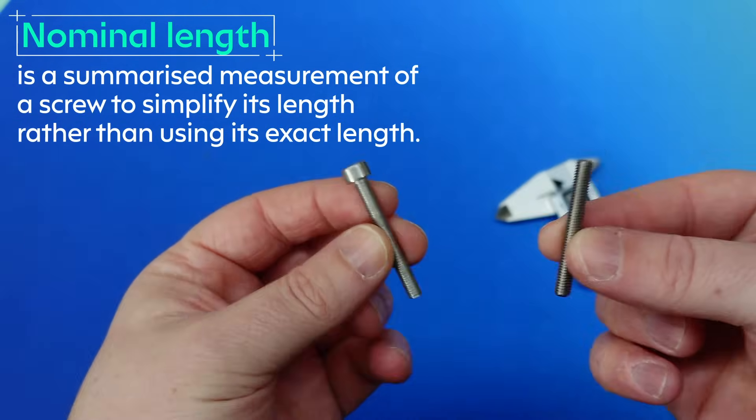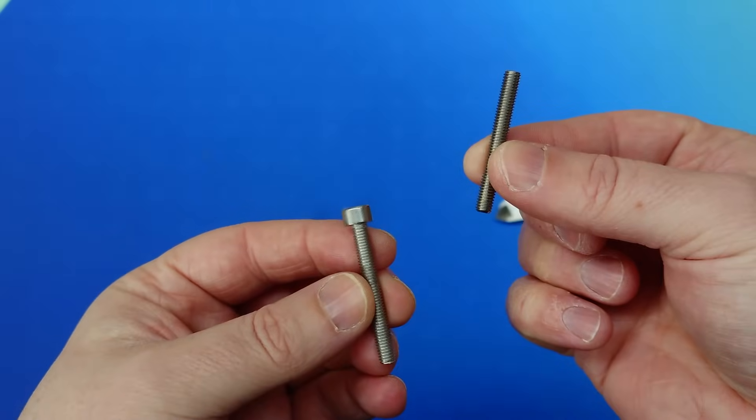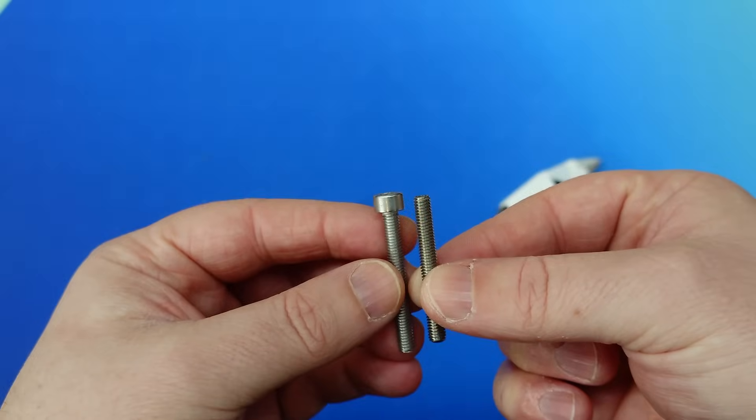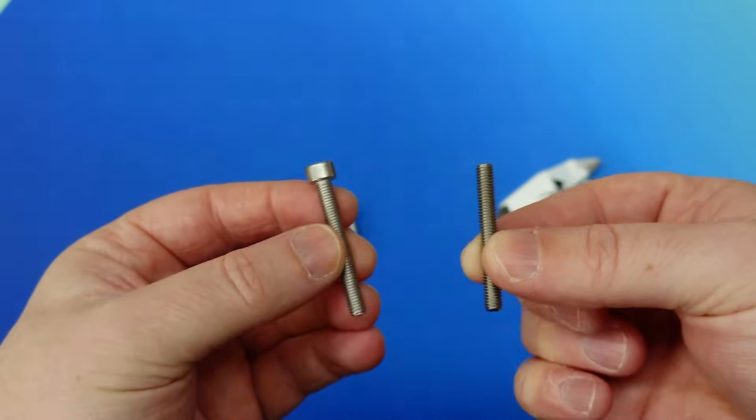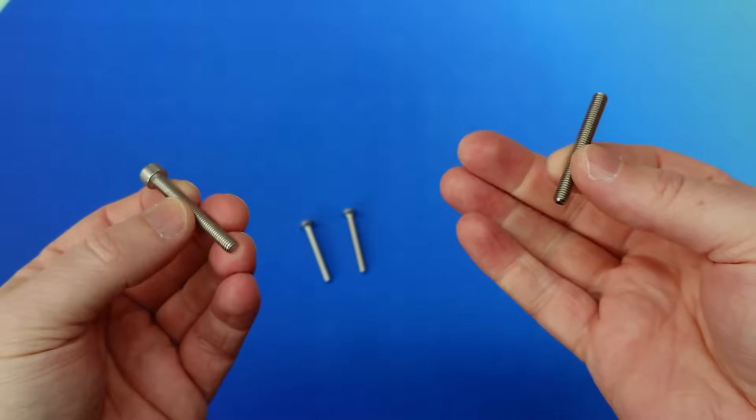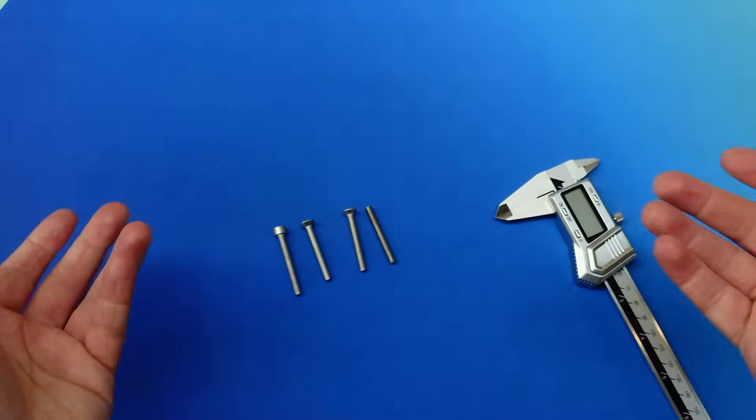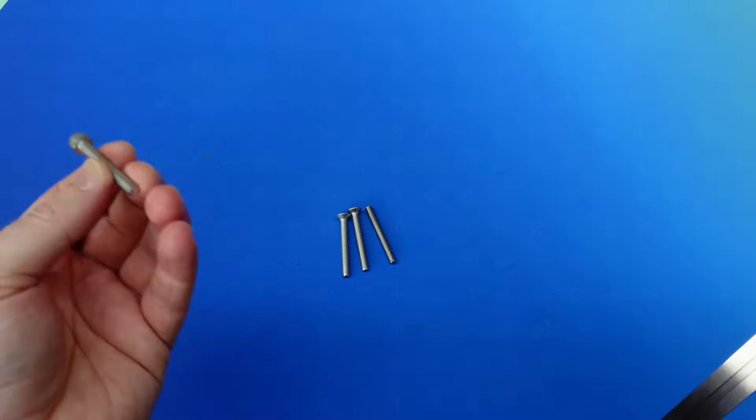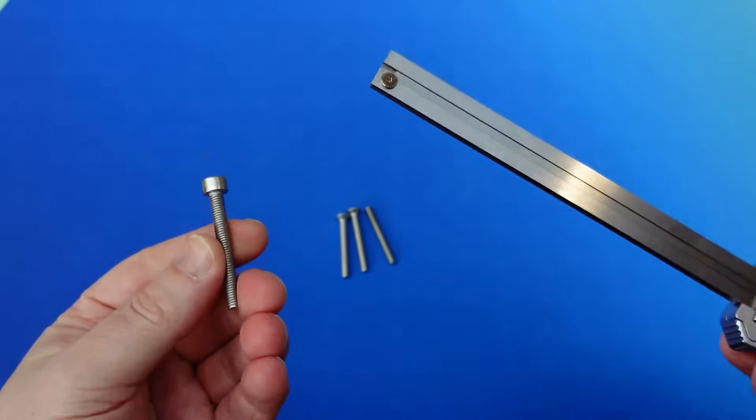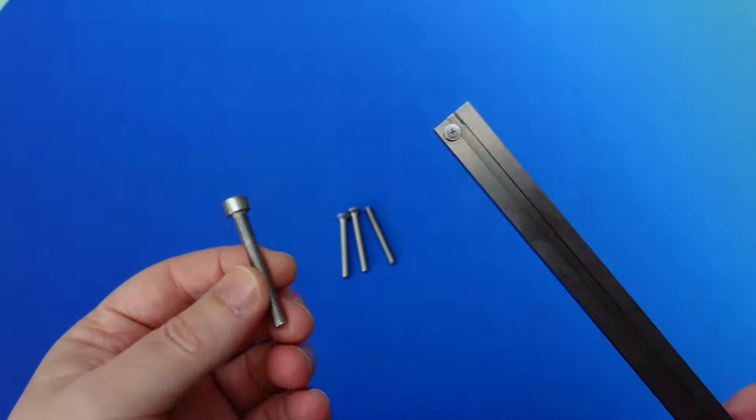Now you might be thinking, hang on, that cap head screw is longer than the grub screw overall, and you're right, but the key thing to understand here about measuring screws is that when you're looking at the length, depending on the head type, you'll measure from a different point. The easiest way to think about this is that when we measure the length of a screw, no matter if it's metric, imperial, or we just don't know, we're actually measuring how much of that screw sits below the surface of the workpiece.